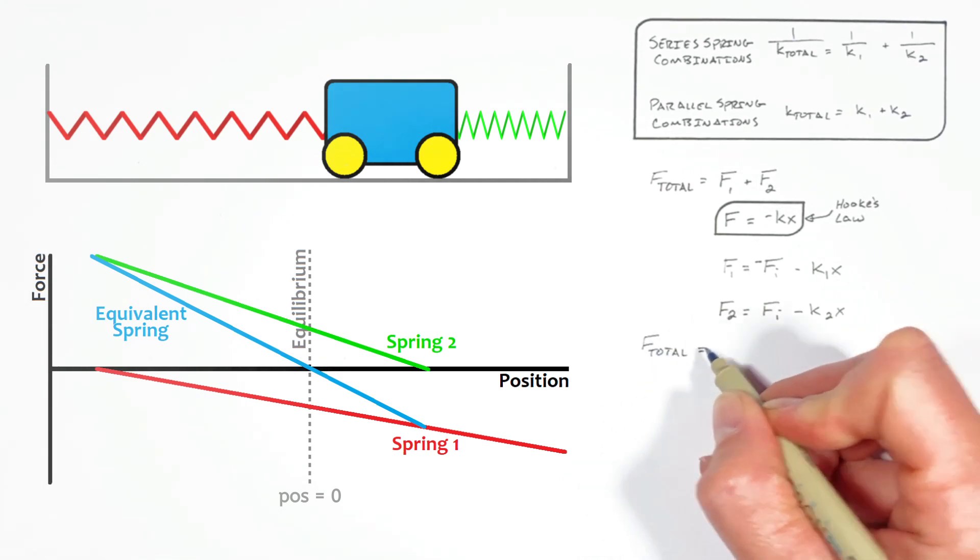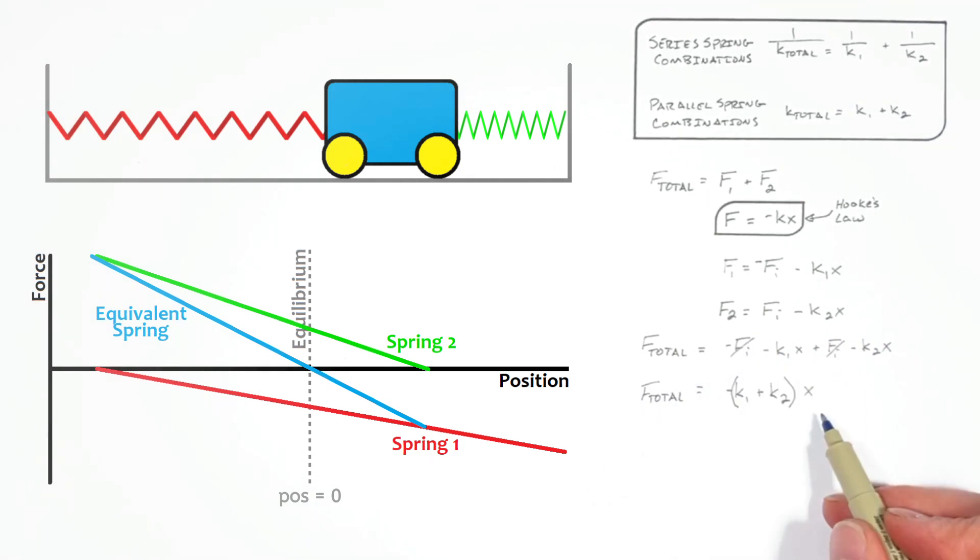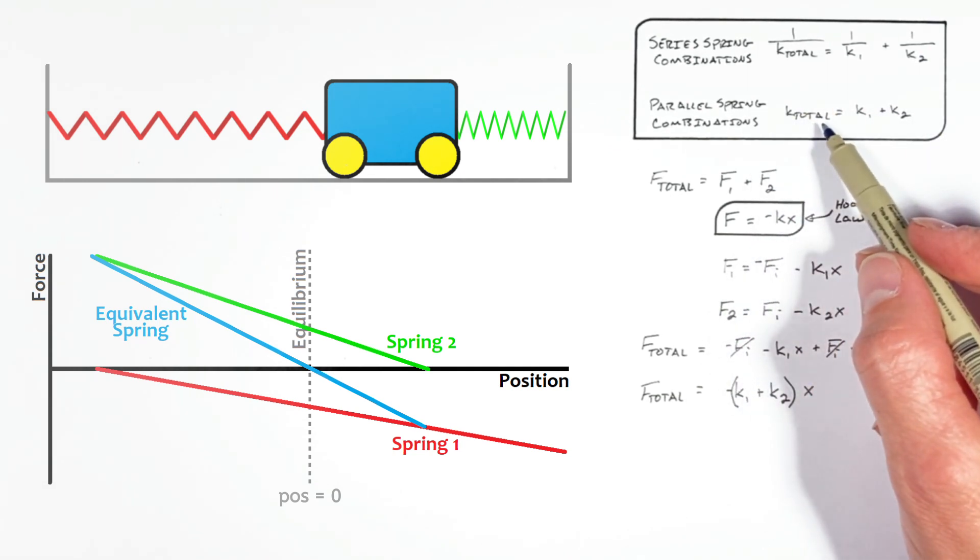So putting these equations together, we get our total force is this term, but our initial forces cancel out, leaving us with this expression, where we're ultimately just adding together our two spring constants, which is exactly what we saw up here in our equation for parallel spring combinations.